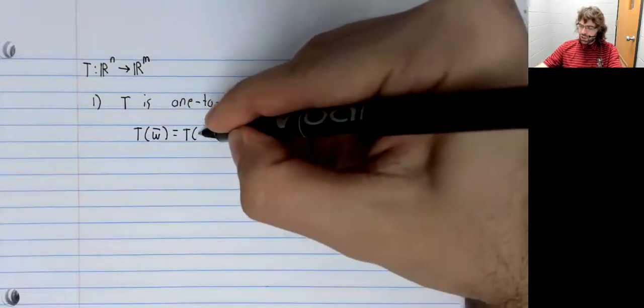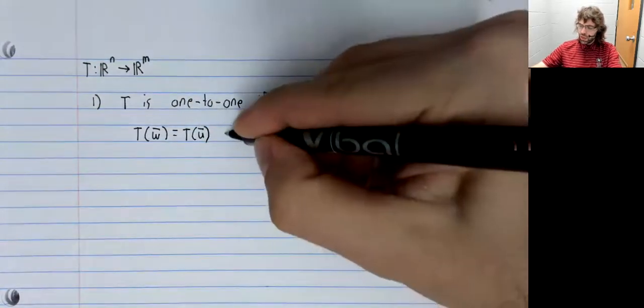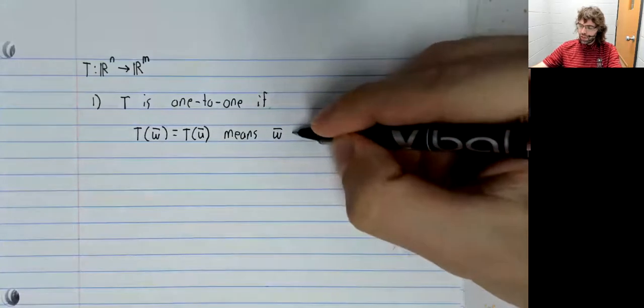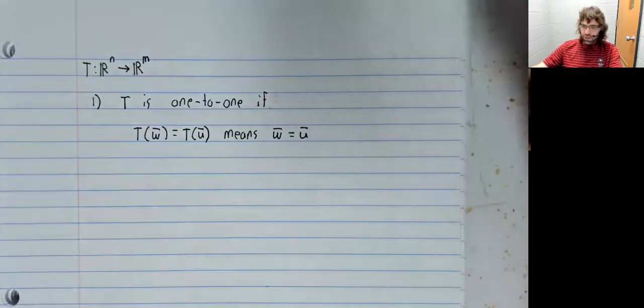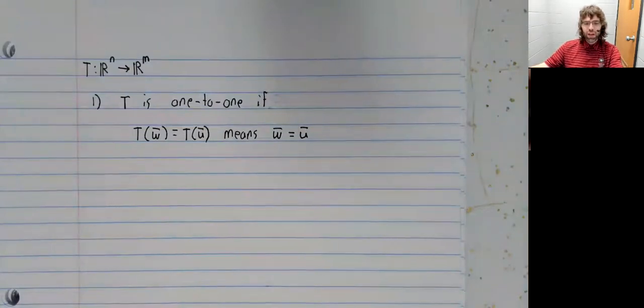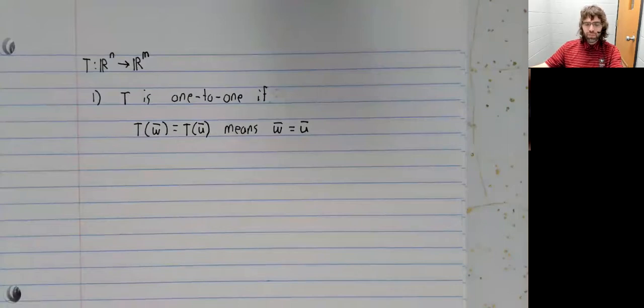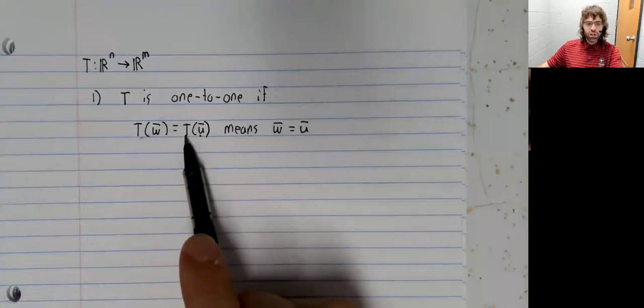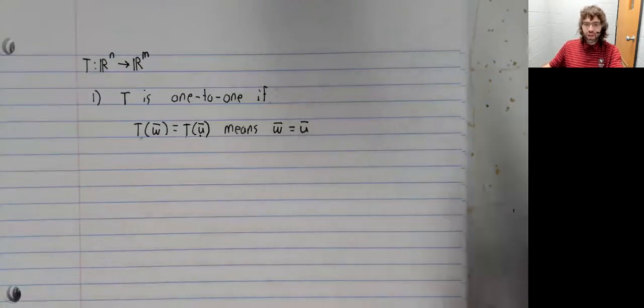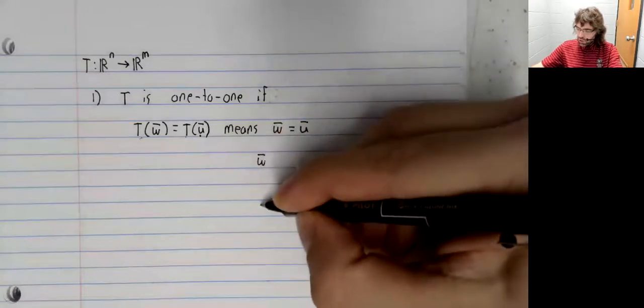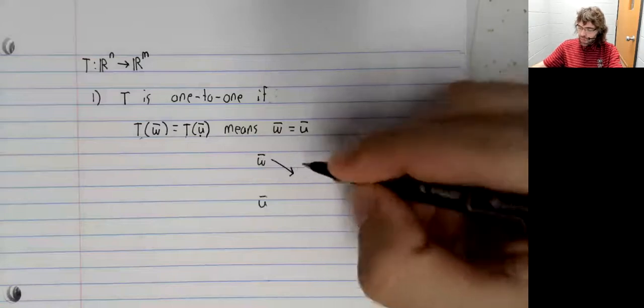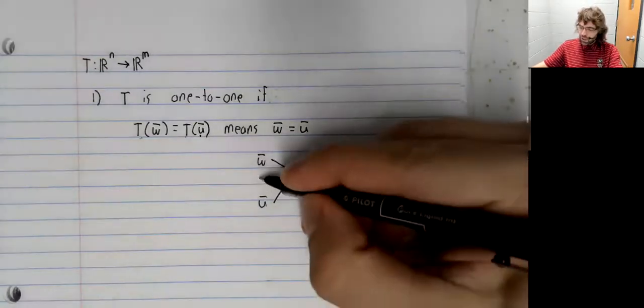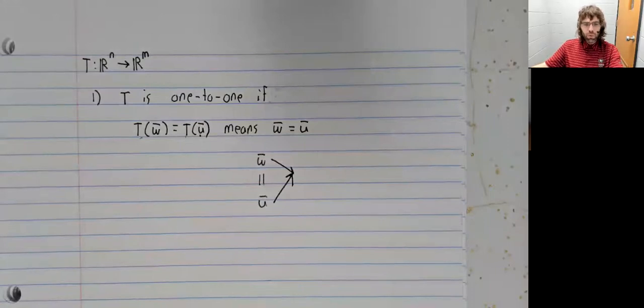So that's a definition you should have seen before, and it passes through without modification to our current context. A transformation is one-to-one if two vectors having the same image means that actually there's one vector. If W and U are both mapped to the same place, then actually W equals U.